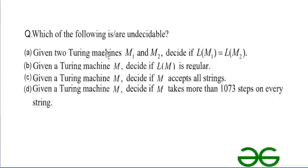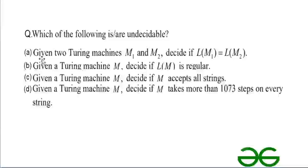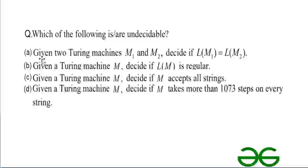Statement one: given two Turing machines M1 and M2, decide if L(M1) = L(M2). This is the equality problem, and the equality problem is undecidable for Turing machines. Decidable means you have a problem and an algorithm to solve it in finite time. Undecidable means you have a problem but no algorithm or machine to solve it.